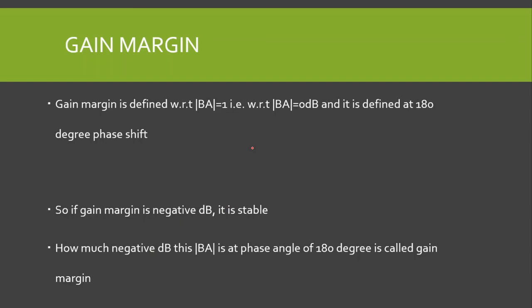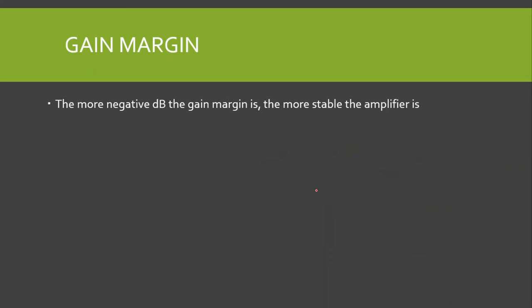For example, a gain margin of −3 dB means beta-A is less than 1, making the amplifier stable. Another amplifier with gain margin of −6 dB is more stable than the one with −3 dB. The more negative the dB gain margin is, the more stable the feedback amplifier is. A gain margin of −6 dB is better than −3 dB, so that feedback amplifier is more stable.